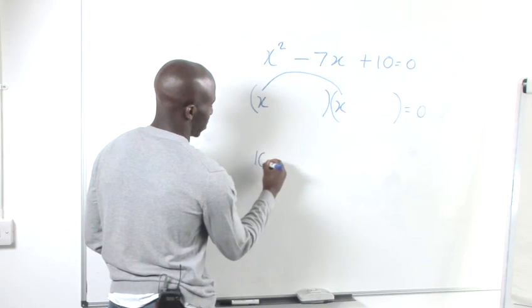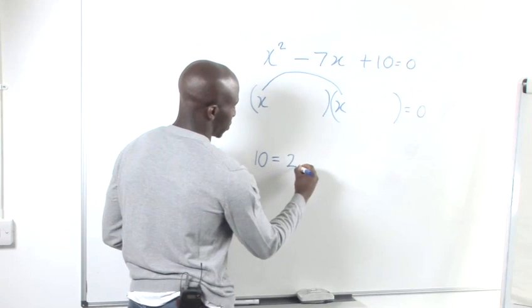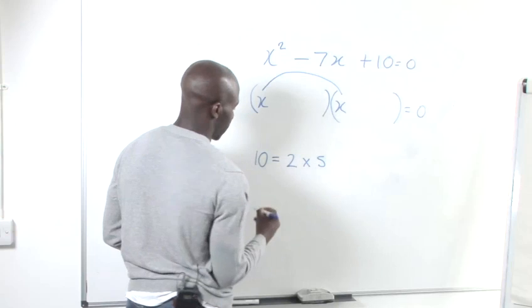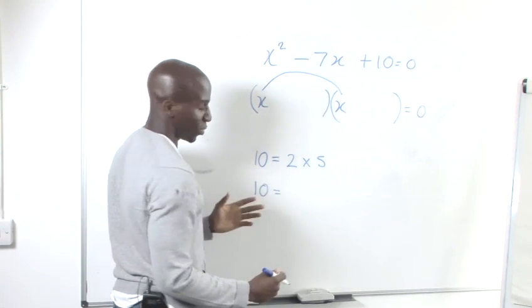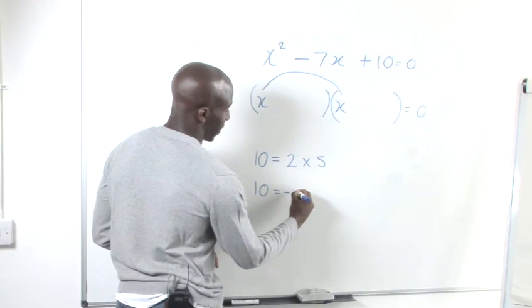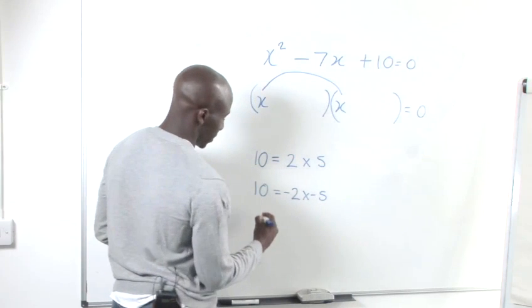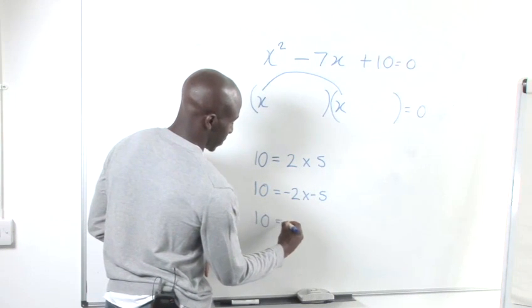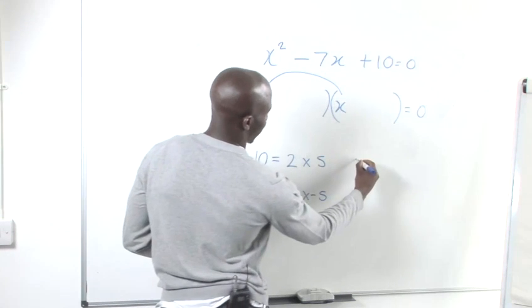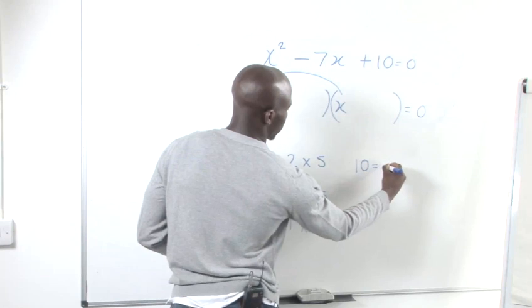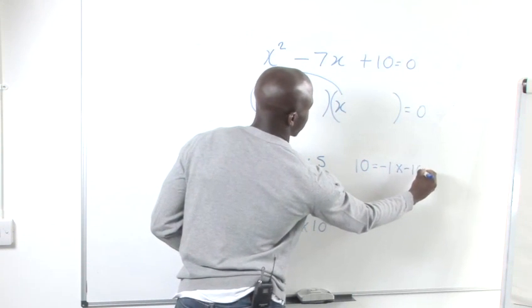So below, our factors of 10 are 2 times 5 and if we remember the negative factors as well, we've got negative 2 times negative 5. We've got 1 times 10 and we also have negative 1 times negative 10.